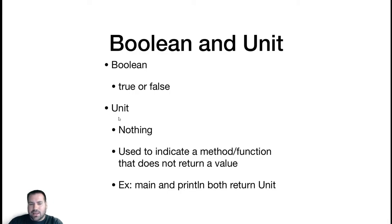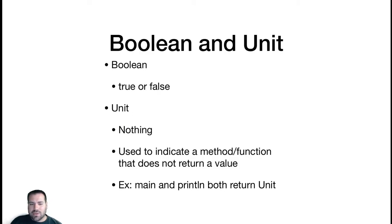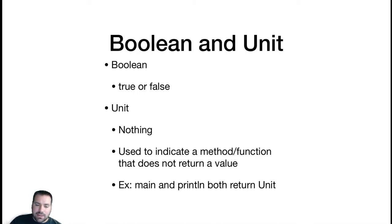Unit is a little bit new — it simply means nothing, this method should not return anything. This is typically used for return types of methods. If a method doesn't return anything, you don't expect any return value — give it a return type of Unit. You can see this in the main method: a main method returns Unit because we don't expect main to return anything. Print line is another example — print line returns Unit. We call it for the side effect of printing something to the screen. This is the same as void in C++ or Java — same idea, but the Scala designers decided to call it Unit.